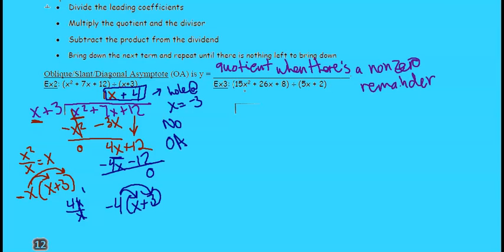Let's do the next one. We have 15x squared plus 26x plus 8 divided by 5x plus 2. So we'll write the dividend inside, which is the expression 15x squared plus 26x plus 8. And then we're going to have our divisor on the outside, 5x plus 2.